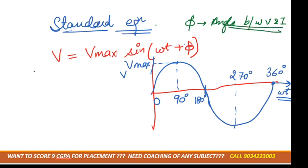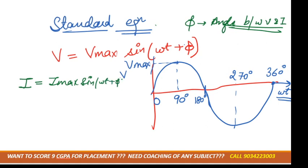Phi is the angle between voltage and current. Similarly, we can get the current equation also — that is i equals i-max times sine of (omega-t plus phi).